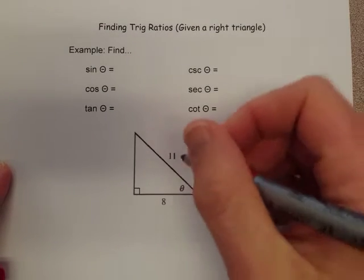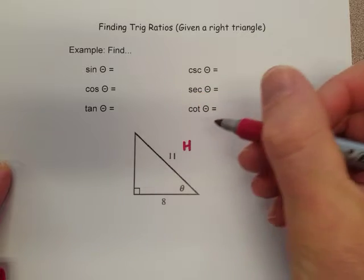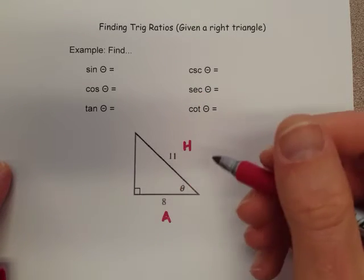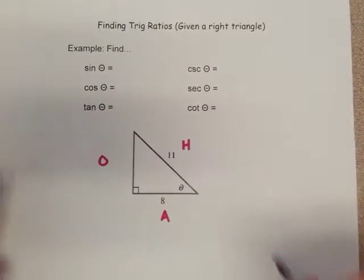If this is theta, 11 is gonna be our hypotenuse, 8 is going to be our adjacent, and we're looking for the opposite over here.